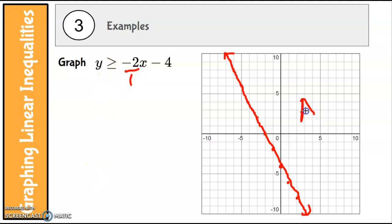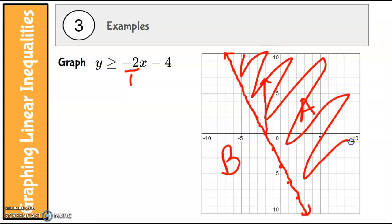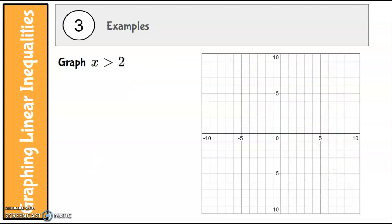That's right, it's A. If you take the line and draw it straight up, that is above the line. So that side is the shaded region, and that's it for that one.